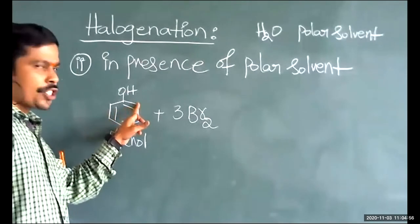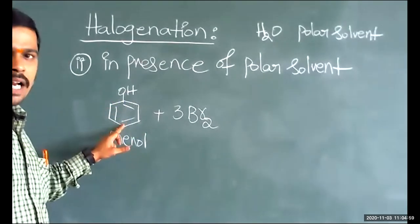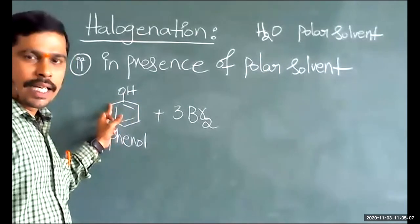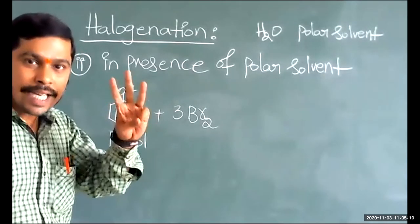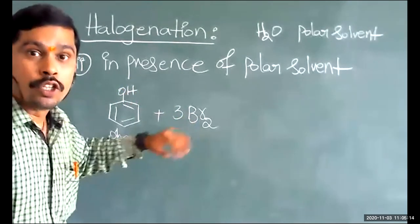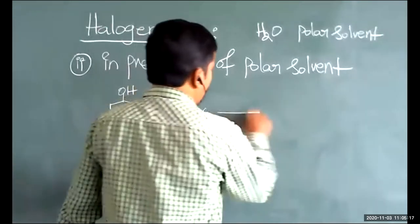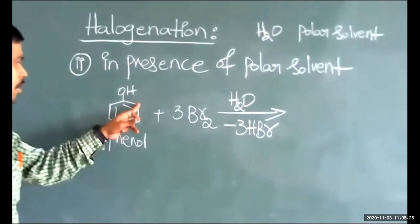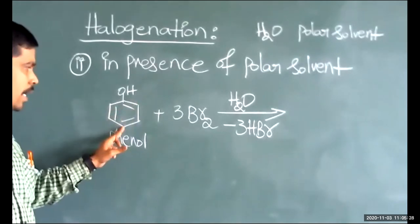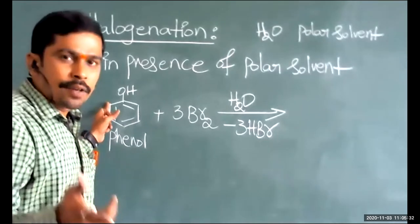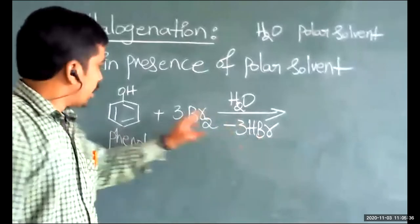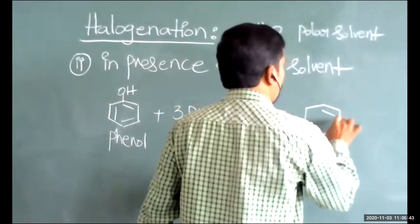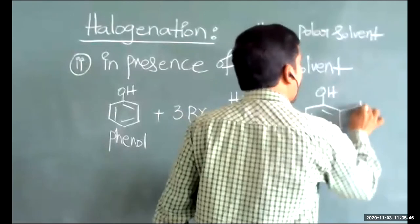At the two ortho positions and the one para position, there are hydrogen atoms. These three hydrogen atoms react with three bromine atoms and are removed as three moles of HBr. The three positions — both ortho positions and the para position — are substituted with three bromine atoms.